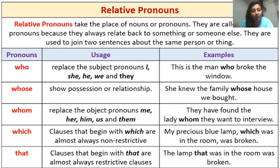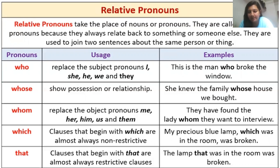In relative pronouns there are five types of words: who, whose, whom, which, and that. 'Who', 'whose', and 'whom' are mostly used for people and living things, whereas 'which' and 'that' can be used for animals and different objects. 'Who' replaces the subject pronouns I, she, he, we, and they. For example: 'This is the man who broke the window' — here 'who' relates back to the man who broke the window.